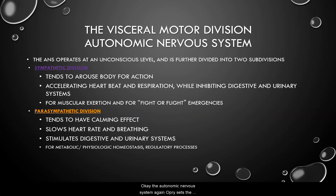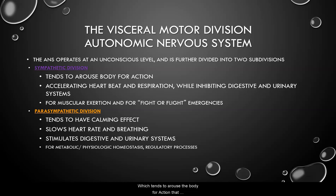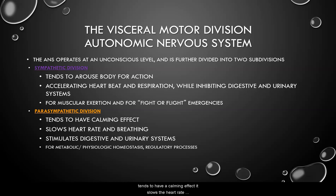The autonomic nervous system operates at the unconscious level and is further divided into two subdivisions. The sympathetic division tends to arouse the body for action — it accelerates the heartbeat, increases respiration, and inhibits digestive and urinary functions for muscular exertion and the fight-or-flight response to emergencies. The parasympathetic division tends to have a calming effect: it slows the heart rate and breathing, and stimulates the digestive and urinary systems. This supports metabolic and physiologic homeostasis and overall regulatory processes.